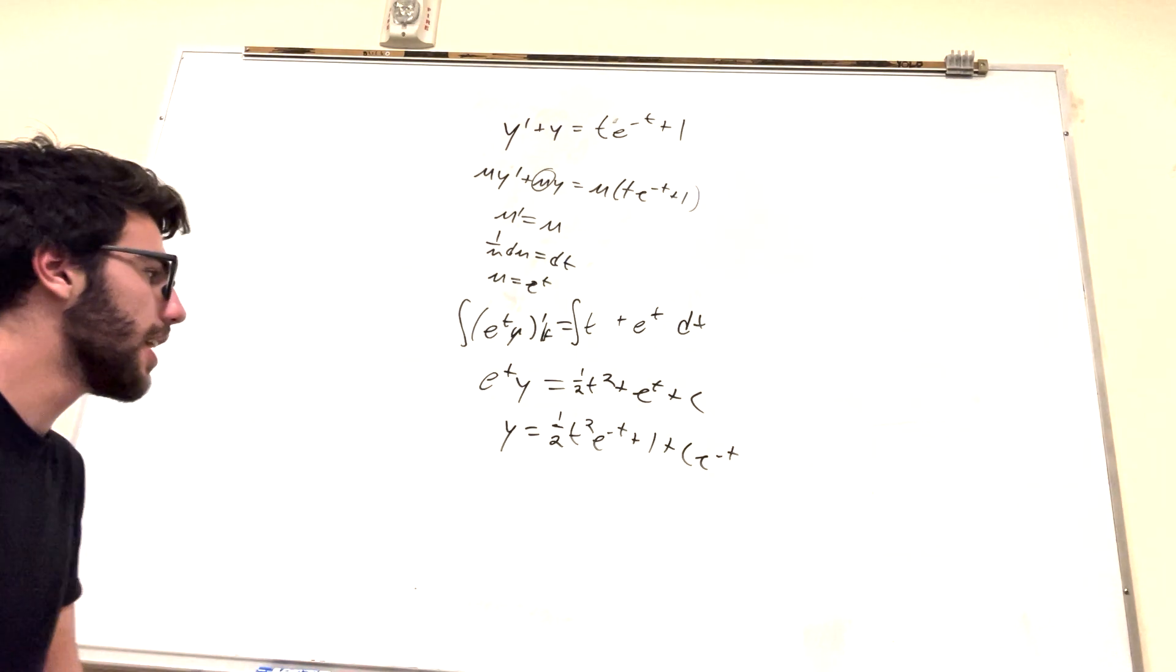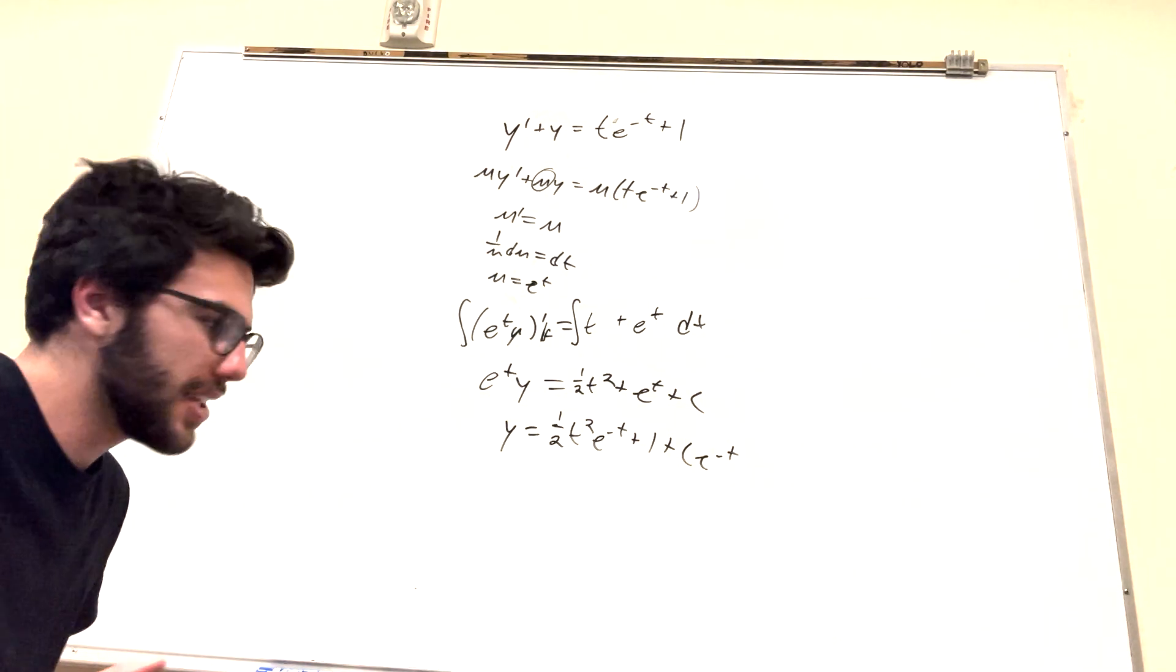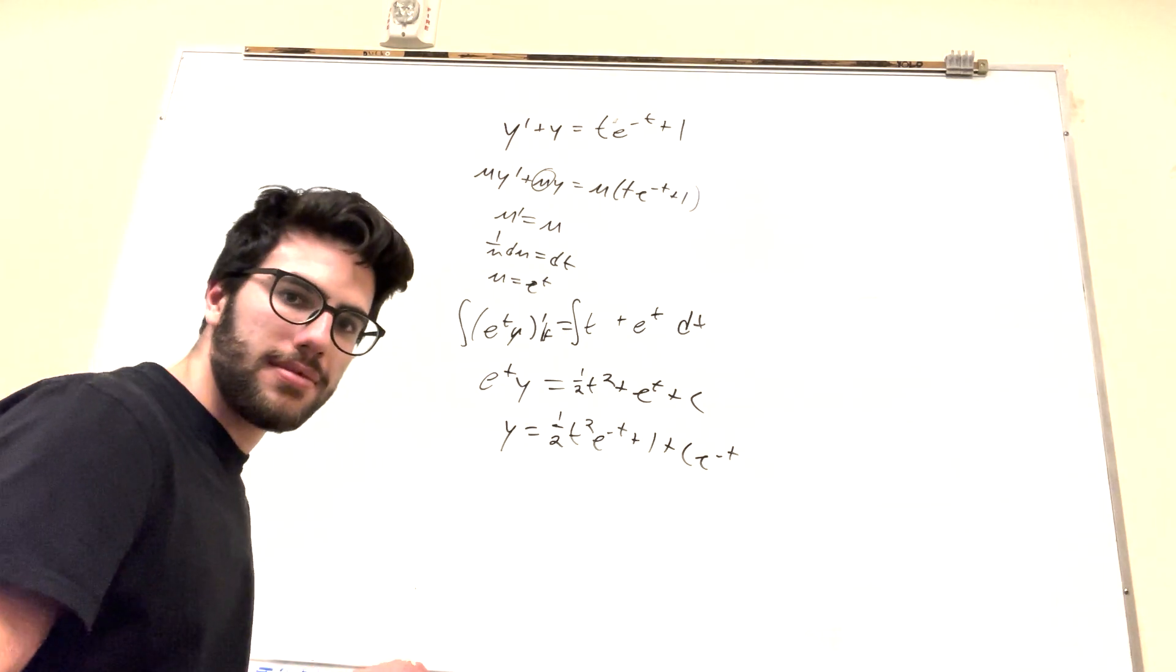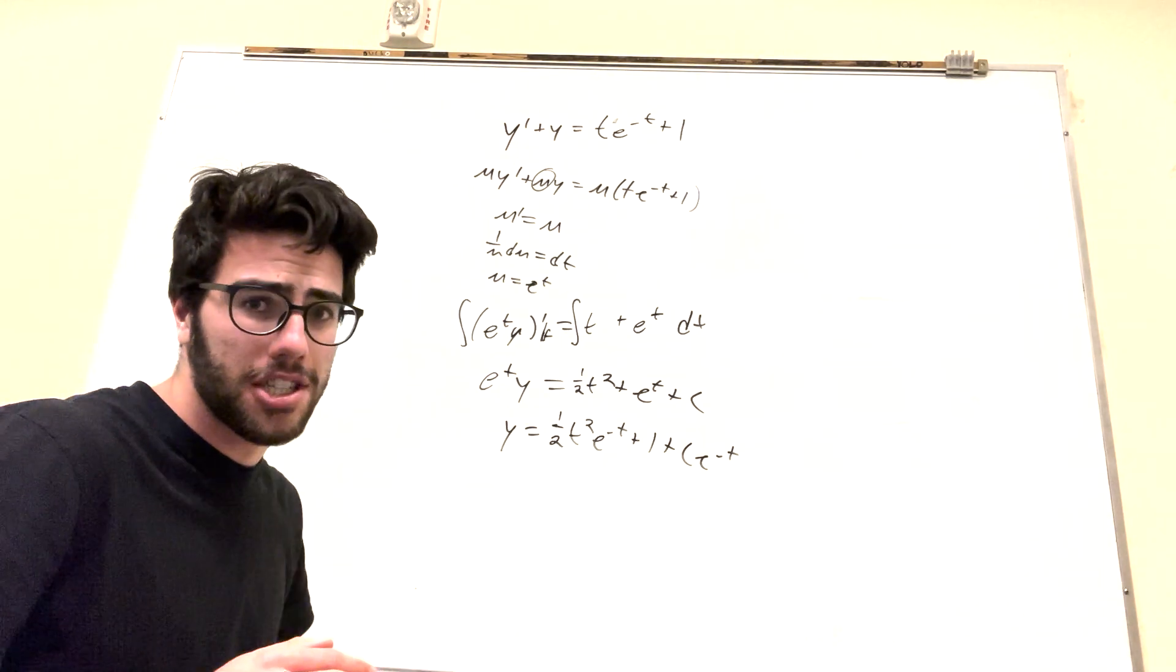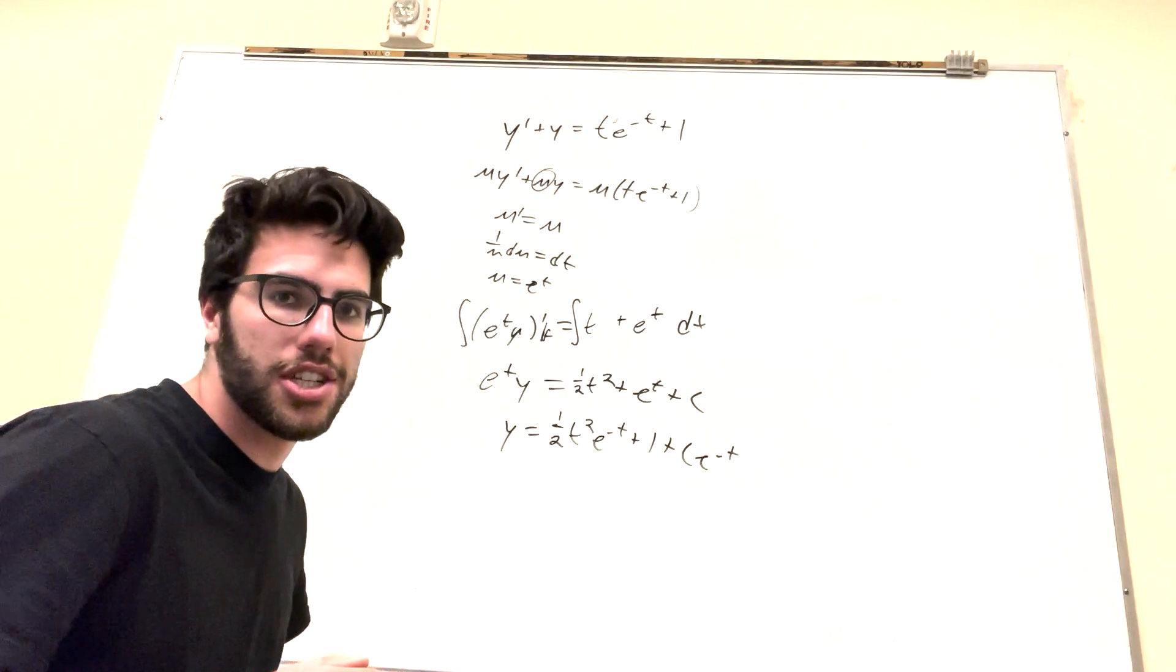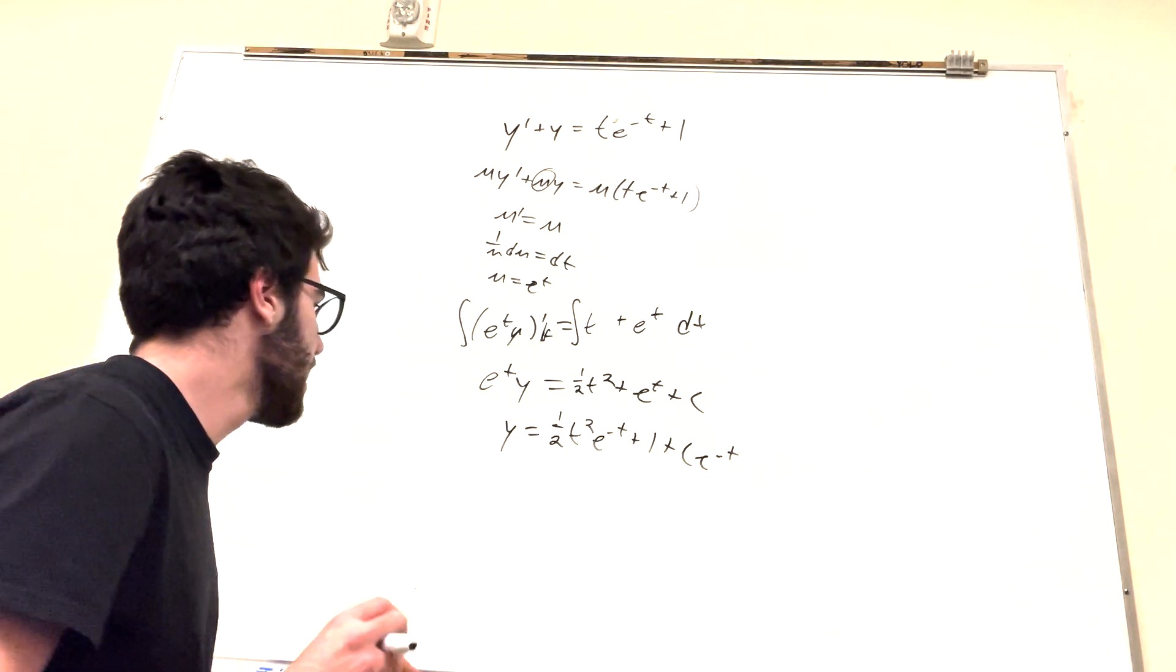Okay, very nice. Alright, so let's see what happens. This is our general solution, right? And usually you'd want to find a normal solution. We don't have any initial conditions, though, so we just have a general solution.